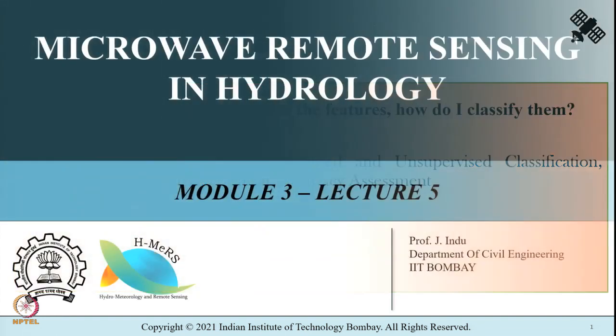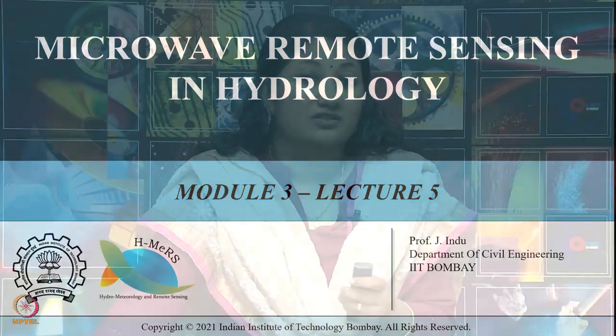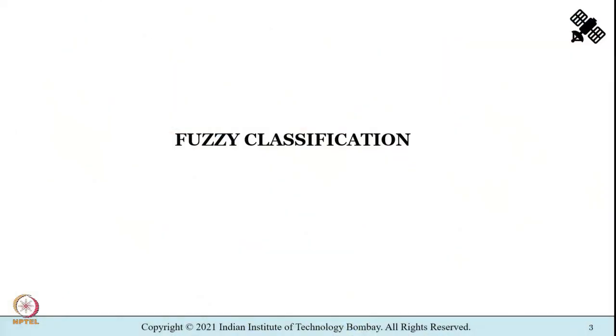We are now in the fifth lecture of the third module and today we shall be introducing fuzzy classification. We have learnt about supervised classification, unsupervised classification, and the method of assessing accuracy of classification using error metrics or confusion metrics — including producers accuracy, users accuracy, overall accuracy, kappa statistics, and so on. With all that background in mind, let us try to understand what fuzzy classification is.